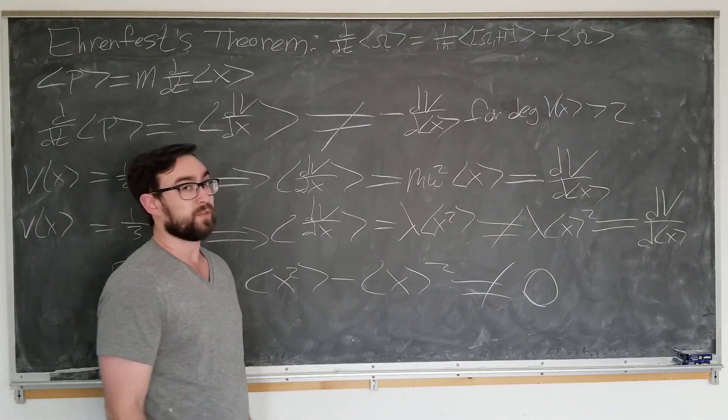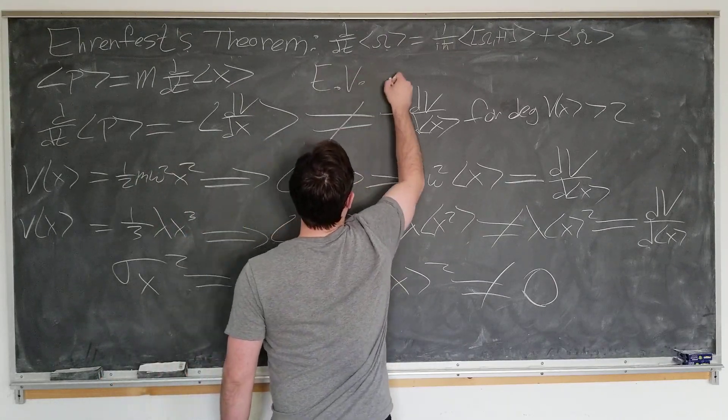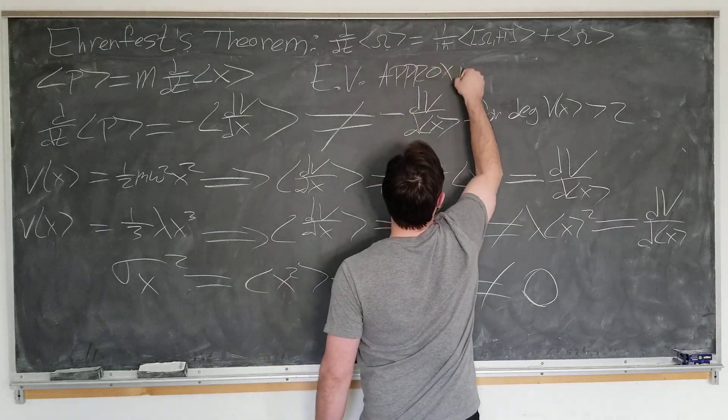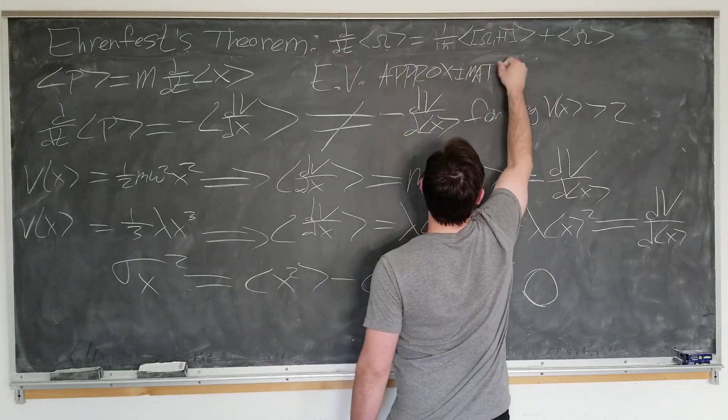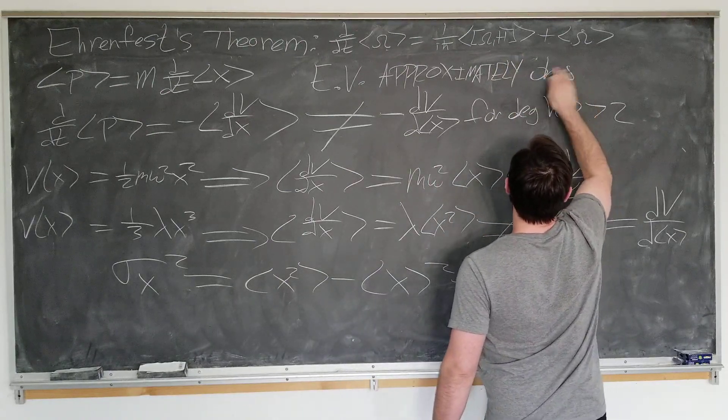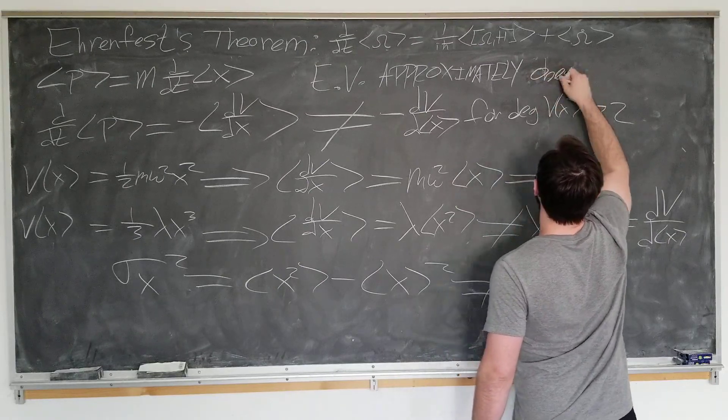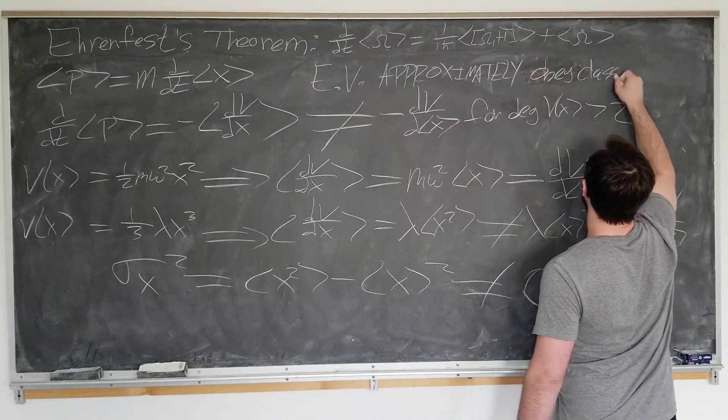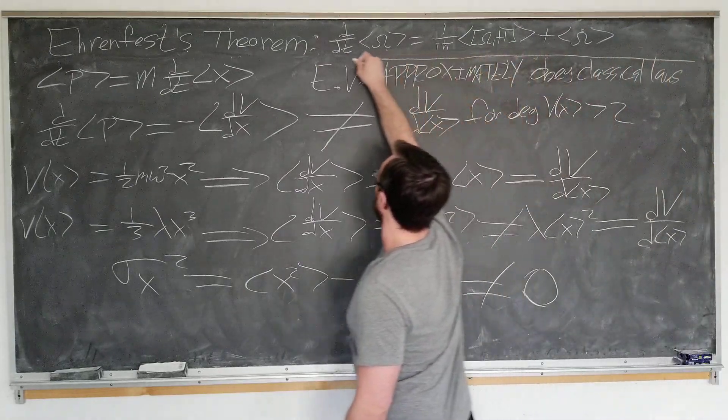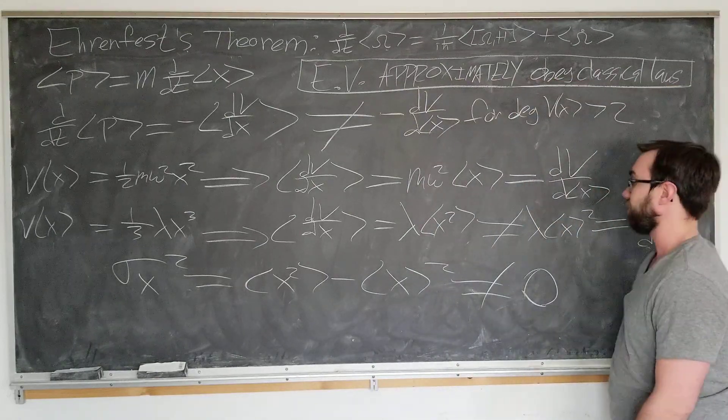As the sum total of this lecture, we can now say that expectation values approximately obey classical laws. That is the gist of this lecture today, expectation values approximately obey classical laws.